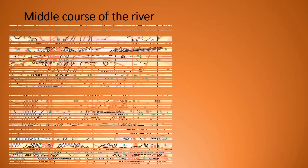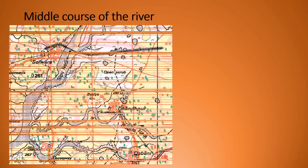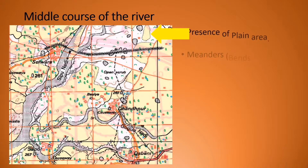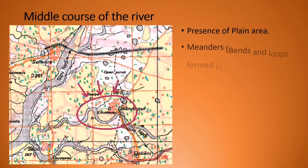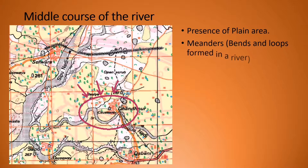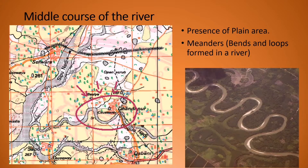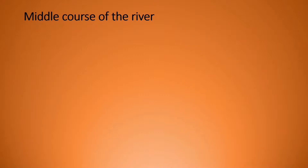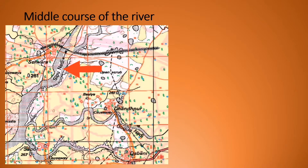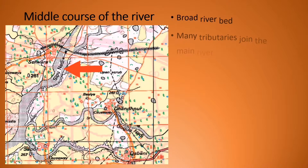Middle course of the river — the river has entered the plain area. You can see the presence of a plain represented through yellow color, which means it is cultivated land. You can also see meanders. What is a meander? It's the bends and loops formed by the river. As the speed of the river is slow, it starts meandering — wavering from its path — and forms bends and loops. The river also has a broad river bed; compared to the upper course where we had thin streams, here the river bed is very very broad.